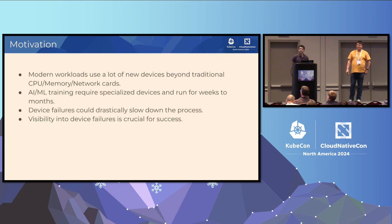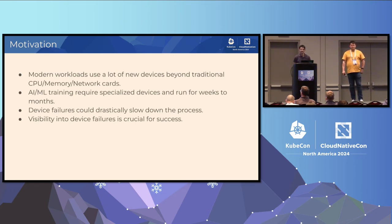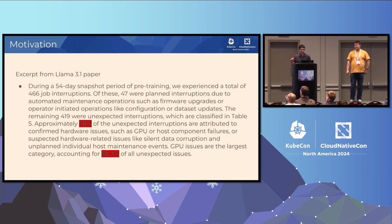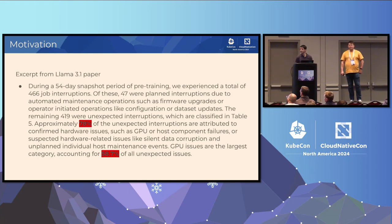Modern workloads use a lot of new devices beyond just CPU, memory, and network — accelerator cards, specialized network devices, and so on. AI/ML training can run for weeks to months, so any device failures could drastically slow you down. We want Kubernetes to be the platform for all these use cases, and visibility into device failures with automatic remediation is our goal. The LLAMA paper cites that 78% of training interruptions were due to hardware issues and 59% because of GPU issues.